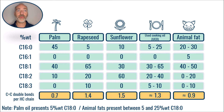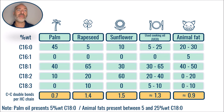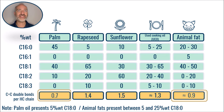We can also report the number of unsaturations per hydrocarbon chain, and we see that the most unsaturated fats are mainly vegetable oils, and that, rigorously, palm oil and animal fats have up to two times fewer unsaturations than sunflower.